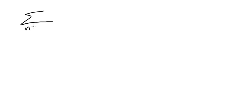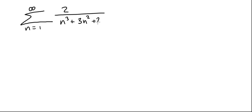We're going to take a look at the series, the summation from 1 to infinity of 2 divided by n cubed plus 3n squared plus 2n. We want to know if this series converges or diverges, and if it converges, what is its sum?